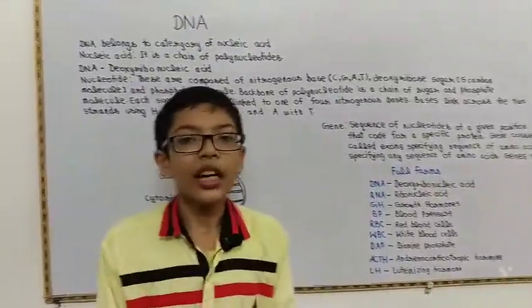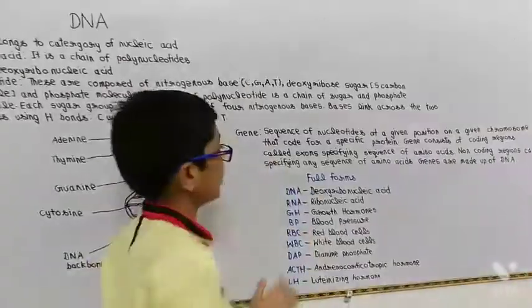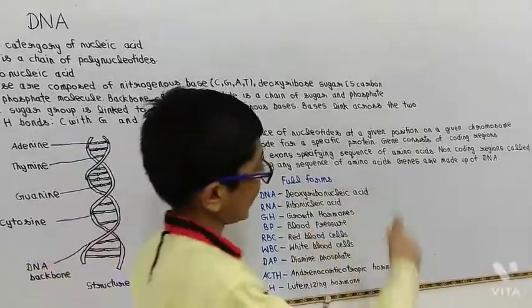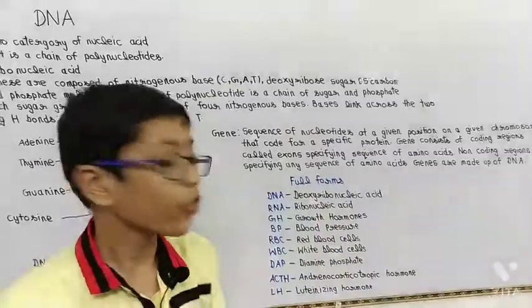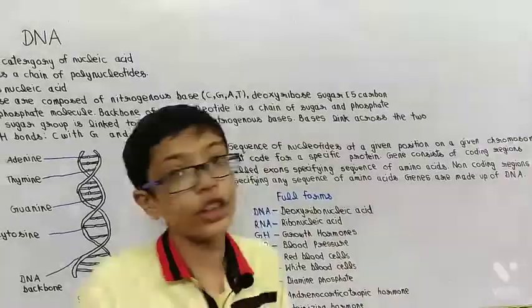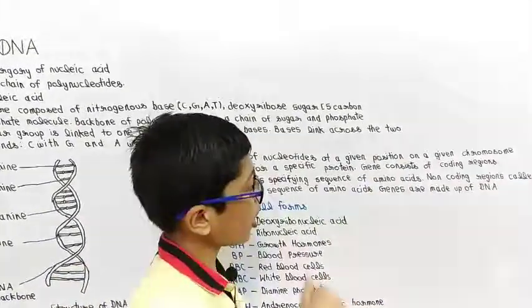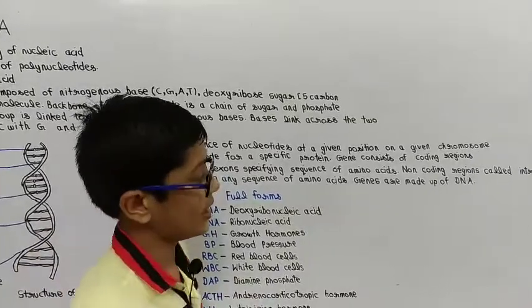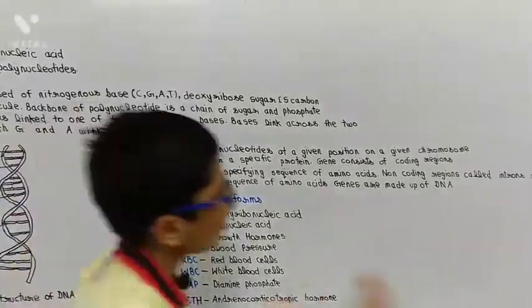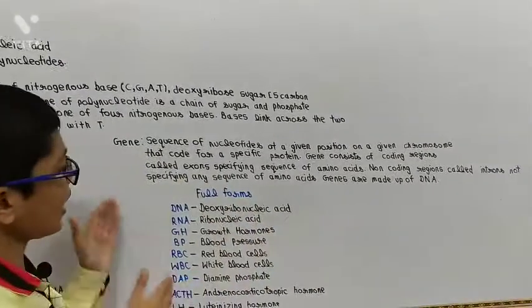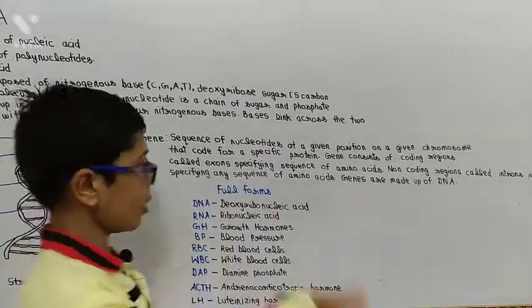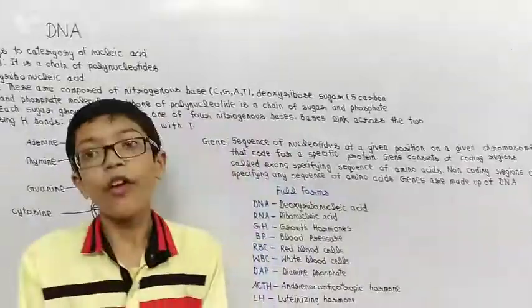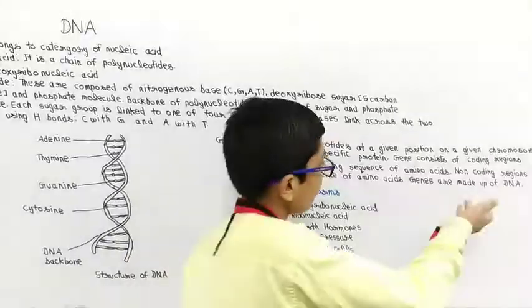And now friends, we study about gene. Sequence of nucleotides at a given position on a given chromosome that code for specific protein. Gene consists of coding regions called exons, specifying sequence of amino acids, non-coding regions called introns, not specifying any sequence of amino acids. Genes are made up of DNA.